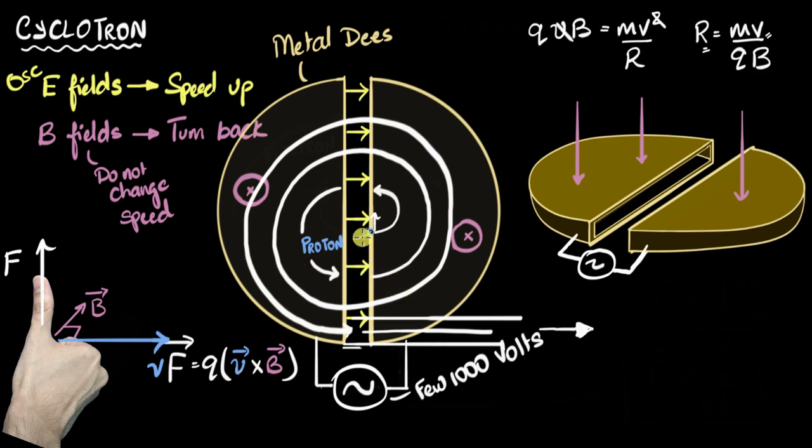So long story short, how do cyclotrons accelerate heavy particles using relatively low voltages? The whole idea is, although these electric fields speed up these particles just a little bit, the magnetic fields turn them back and make them re-enter that electric field. And by flipping the electric field at the right moment, we ensure that every time it enters the electric field, it'll keep speeding up just a little bit. And so the speed keeps adding up over and over and over again, and finally, once it has gathered enough speed, we shoot it out.